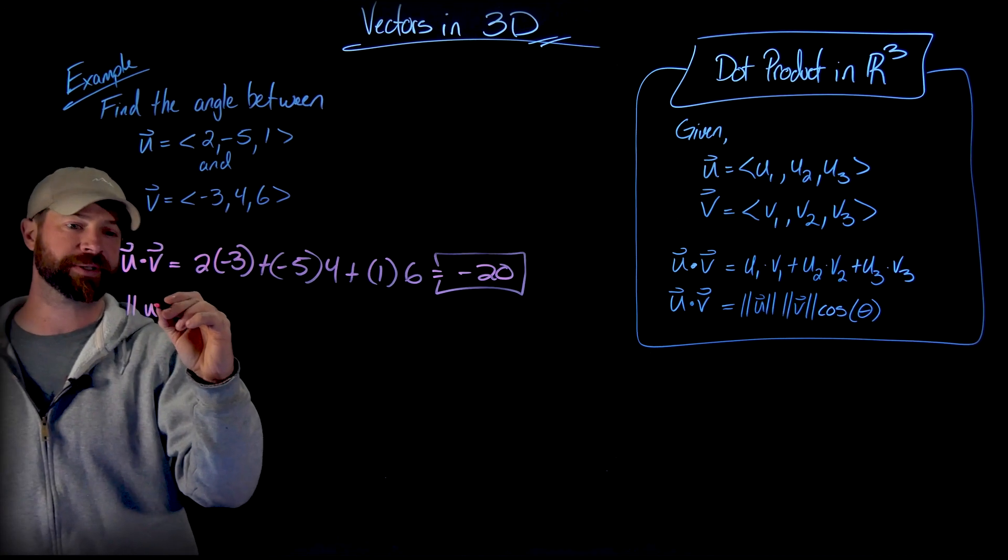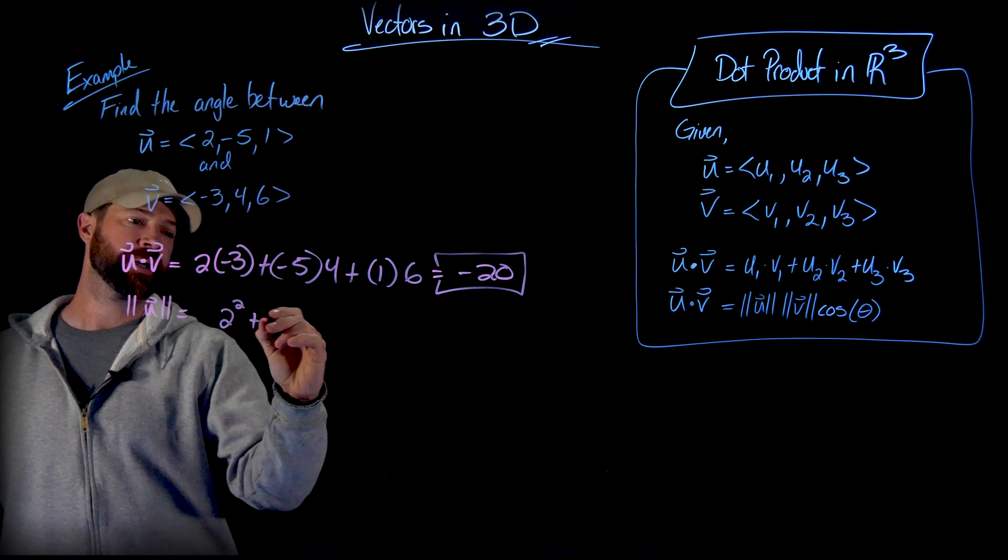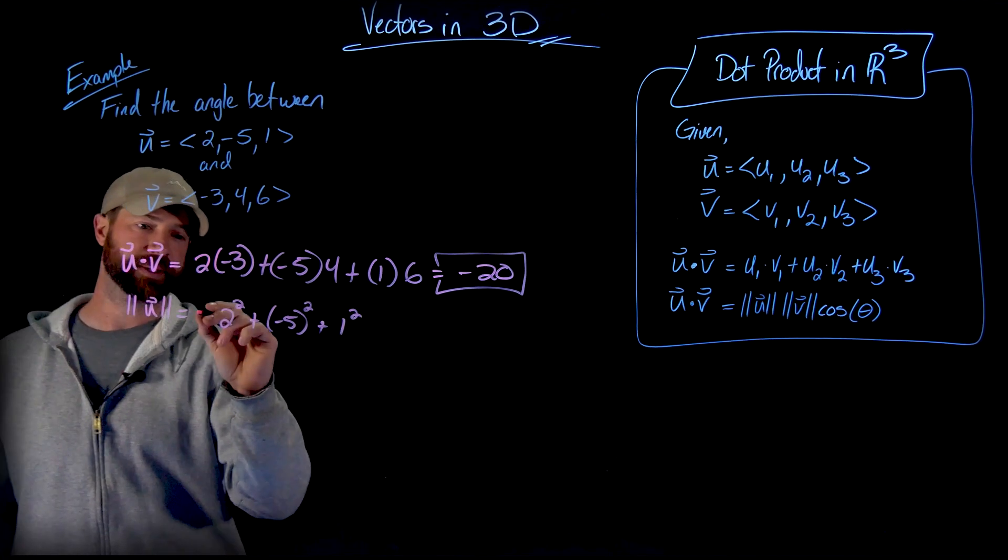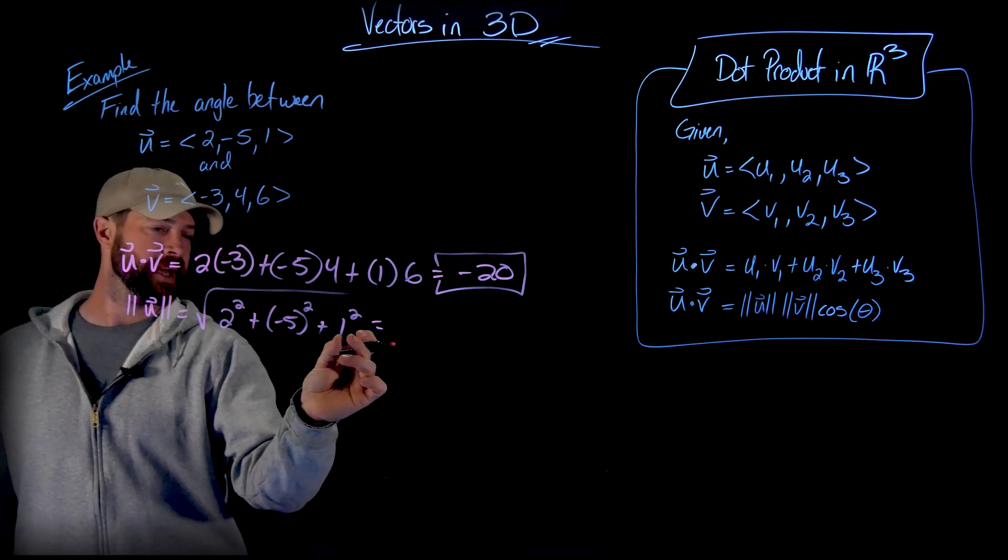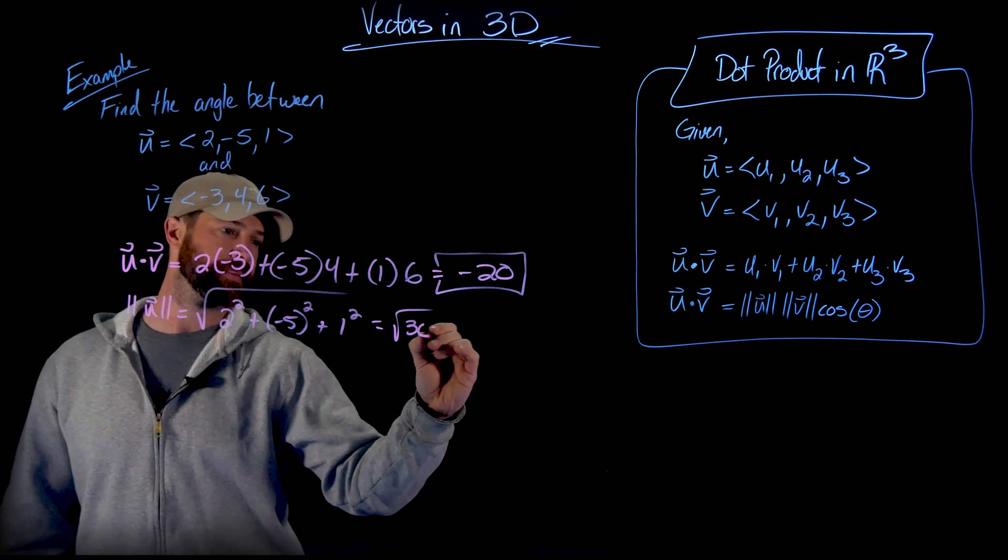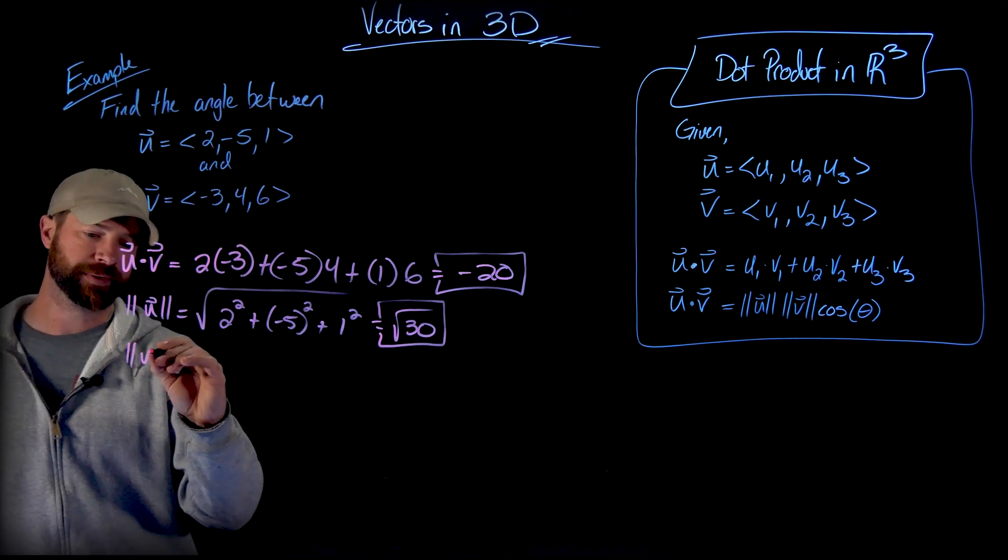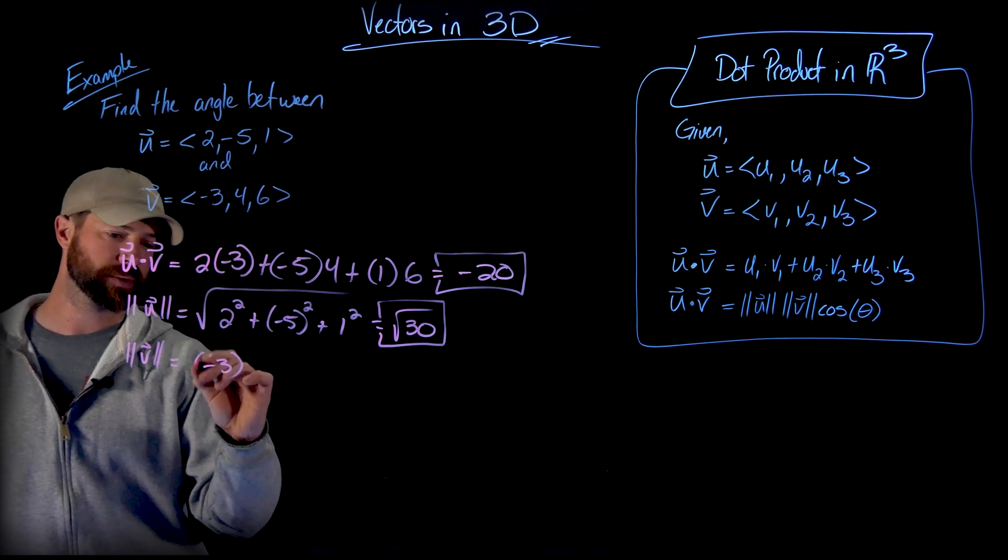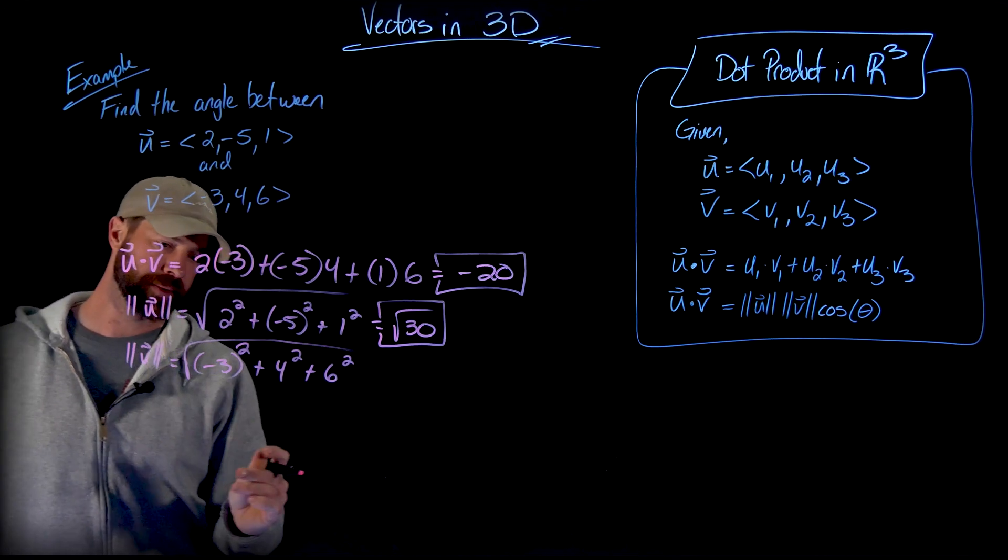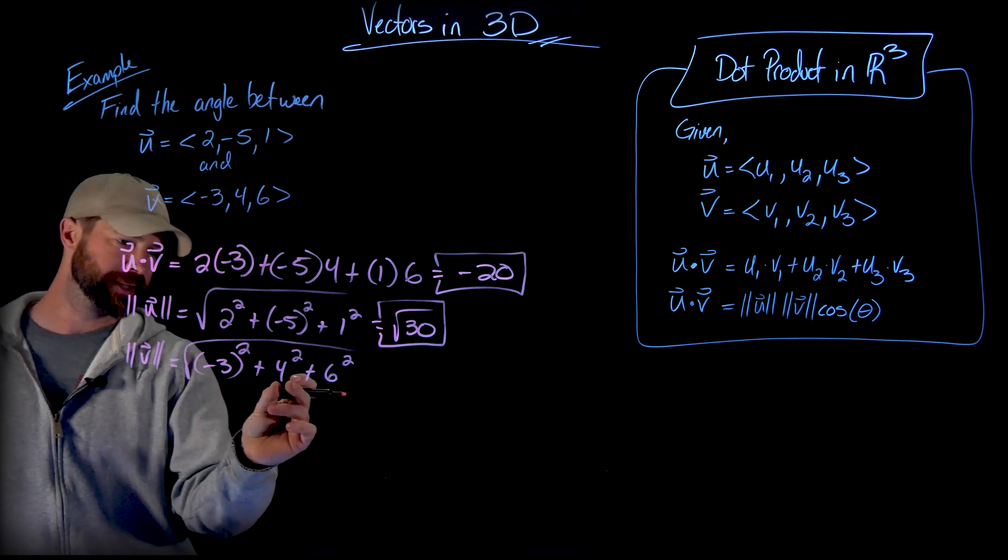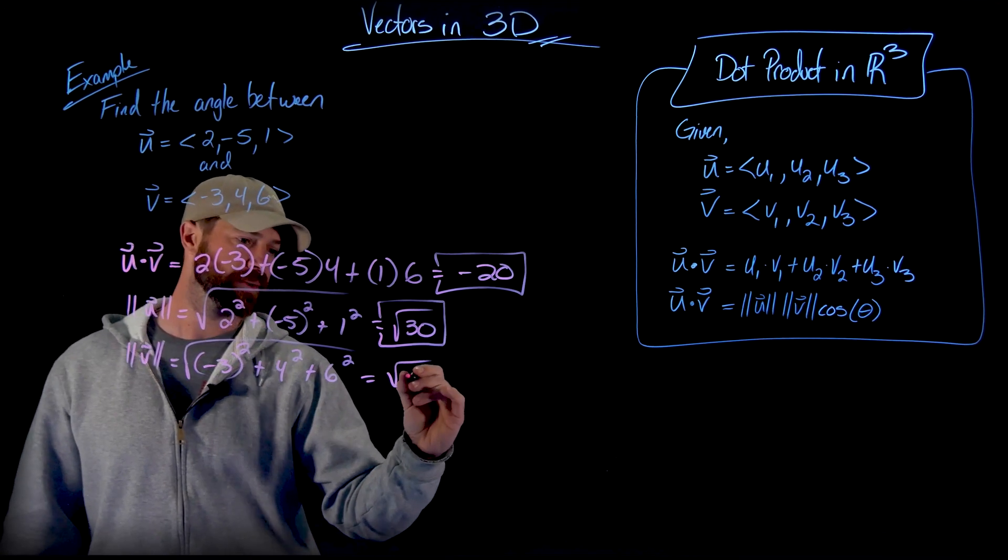Next up, I'm going to find the magnitudes of these two vectors. The magnitude of u is the square root of two squared plus negative five squared plus one squared. So I take the square root of all of that. And when I get that, I got 4, 25, and 1. So that would be the square root of 30. Then the magnitude of v, which is found in exactly the same way, is negative three squared plus four squared plus six squared. We take the square root. This is nine plus 16 plus 36. 36 and 16 is 52 plus nine is 61. We have the square root of 61.